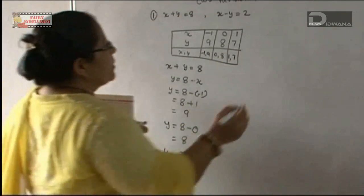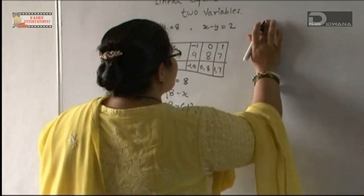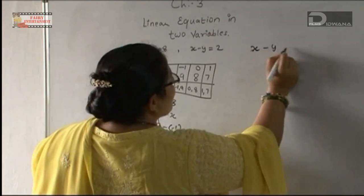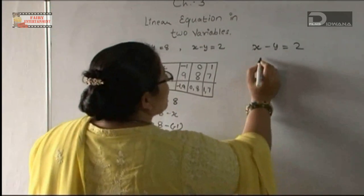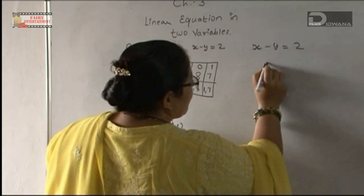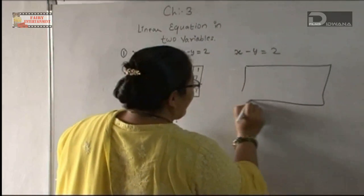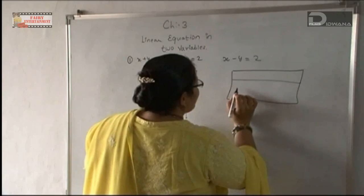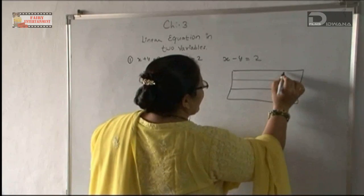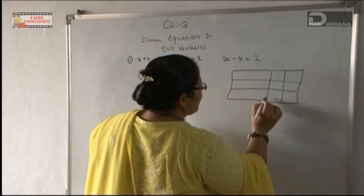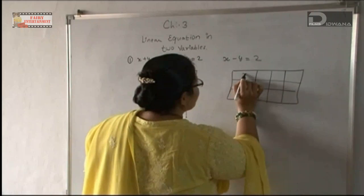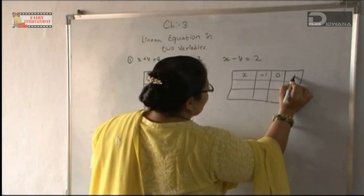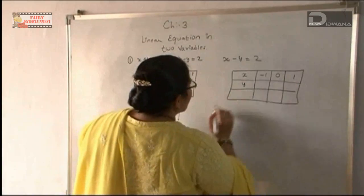Now we will solve Equation 2, which is x minus y equal to 2. We will make a table. We will take the x values by our own choice and find the corresponding y values. We take x values of minus 1, 0, and 1.